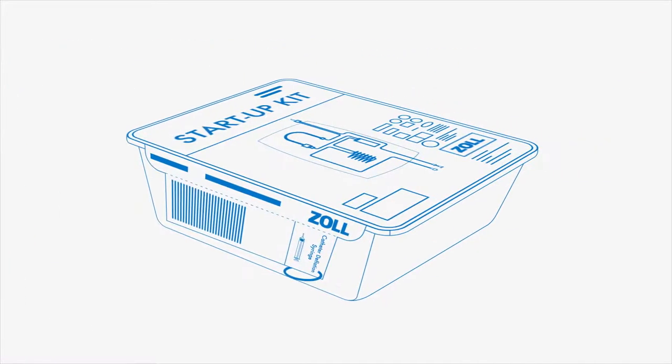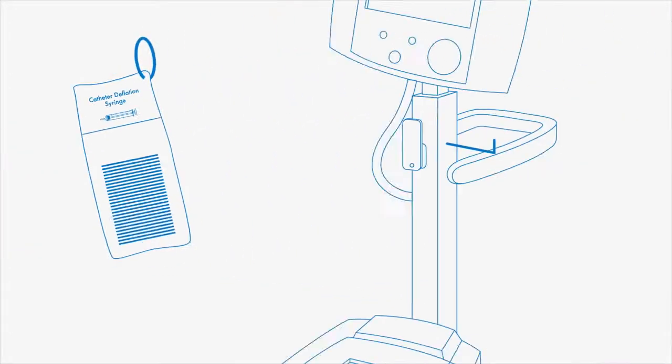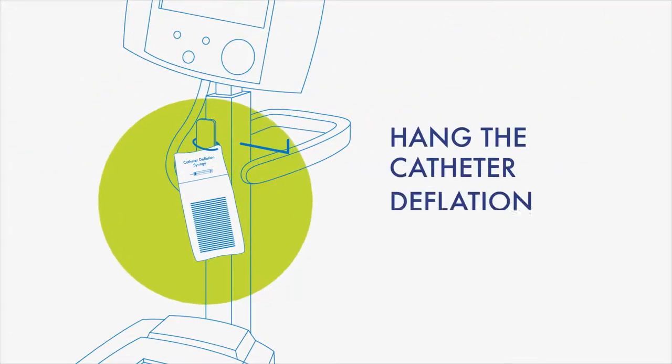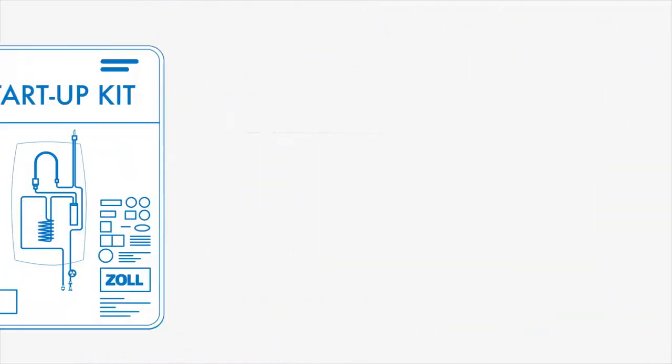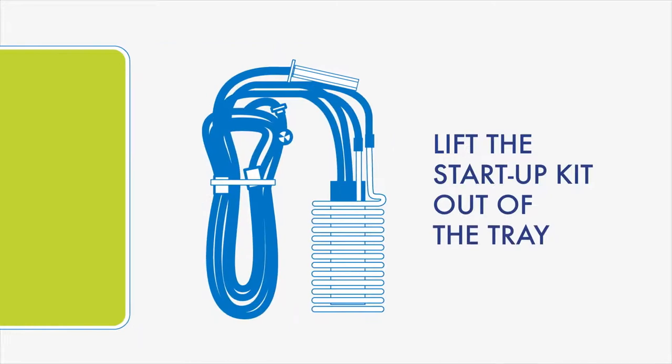Get the startup kit. Remove the catheter deflation syringe bag and hang it on the console hook. Peel open the startup kit. Lift the kit out of the tray.